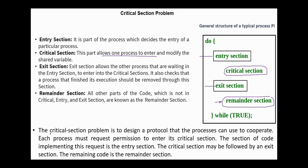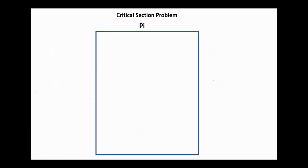The critical section problem is to design a protocol that the processes can use to cooperate. Each process must request permission to enter its critical section. The section of code implementing this request is the entry section.